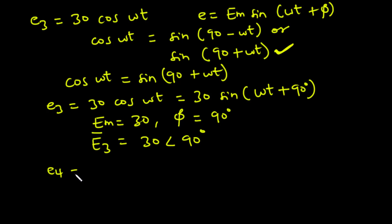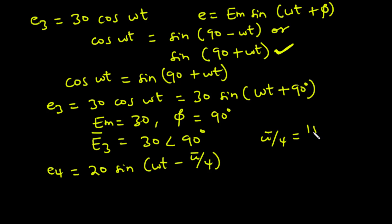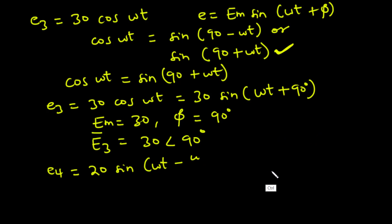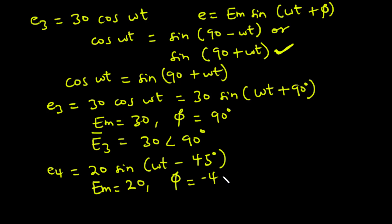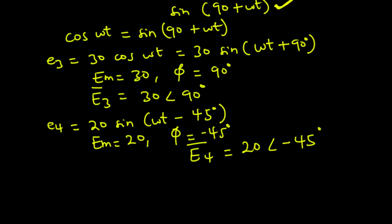And then E4 is equal to 20 sine omega t minus pi over 4. Now pi over 4 is equal to 180 over 4, which is equal to 45 degrees. So we can represent pi over 4 as 45 degrees. Em is equal to 20, and the phase angle is negative 45 degrees. So E4 bar is equal to 20 angle negative 45 degrees.